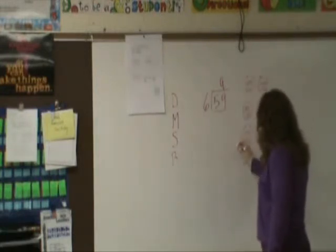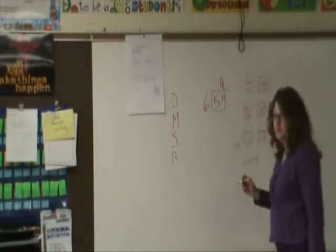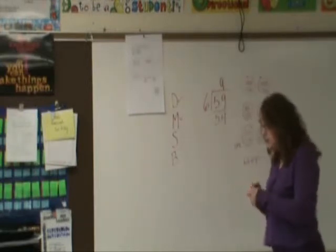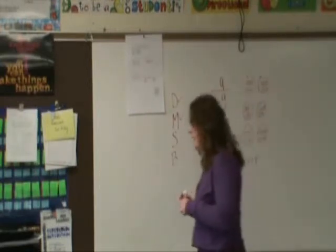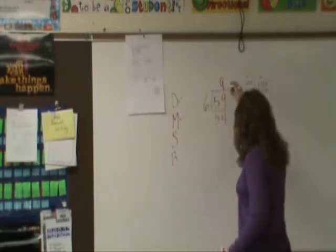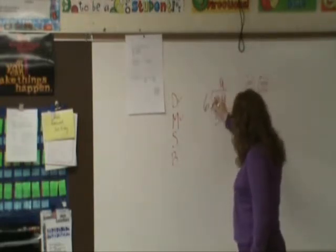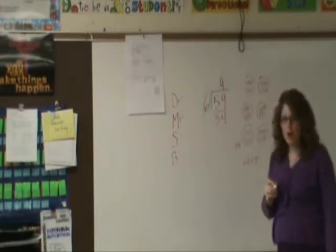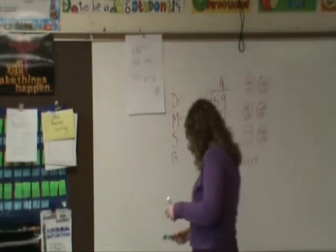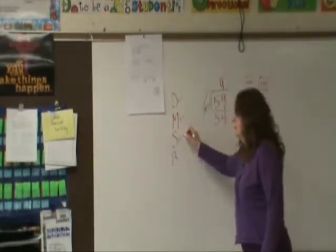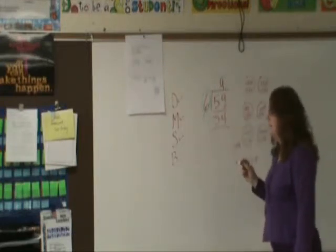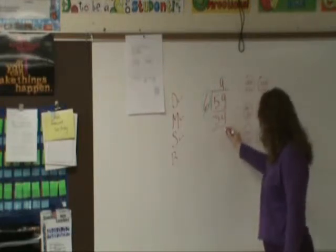When I was doing my count, I got to the number 54. So 9 times 6 is 54. I divided and I multiplied. I multiplied the 9 and the 6 and got 54. Now I have to subtract, and I'm going to subtract 54 from 59, and when I do, I get 5.